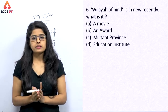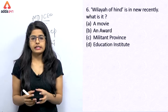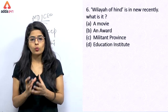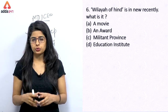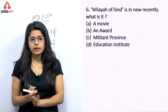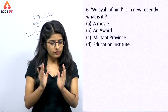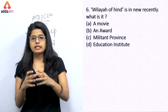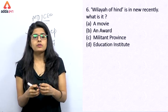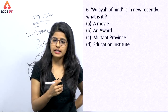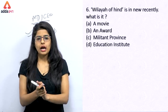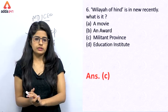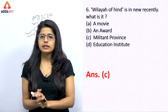Wilayah of Hind is in the news recently — what is it? Is it a movie, an award, a militant province, or an education institute? From options A, B, C, D — it was declared by the Islamic State. Khorasan has set up a province — in India. So the correct answer is option number C — that is, a militant province.